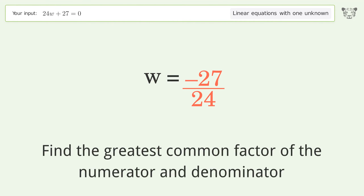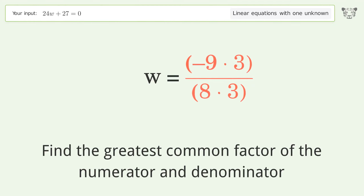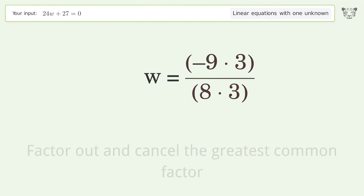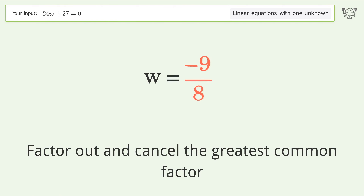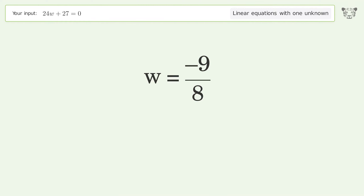Find the greatest common factor of the numerator and denominator, then factor out and cancel the greatest common factor. The final result is w equals negative 9 over 8.